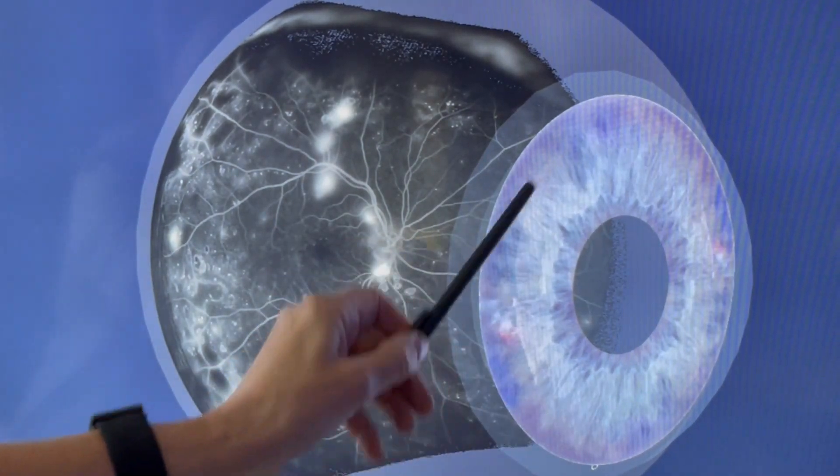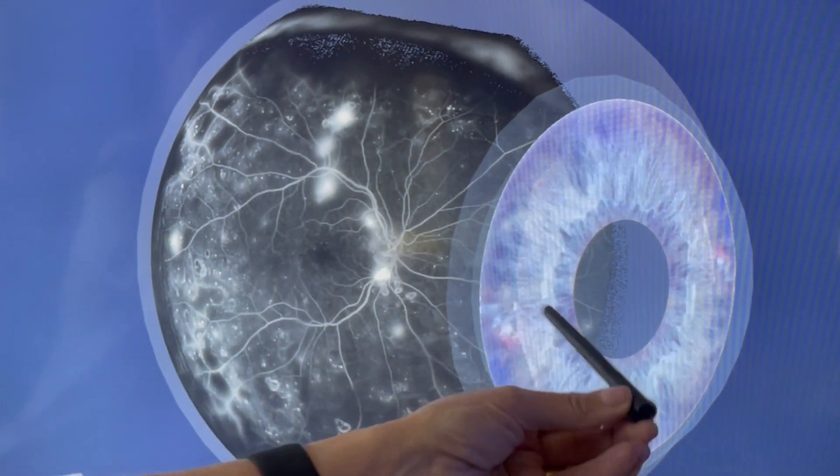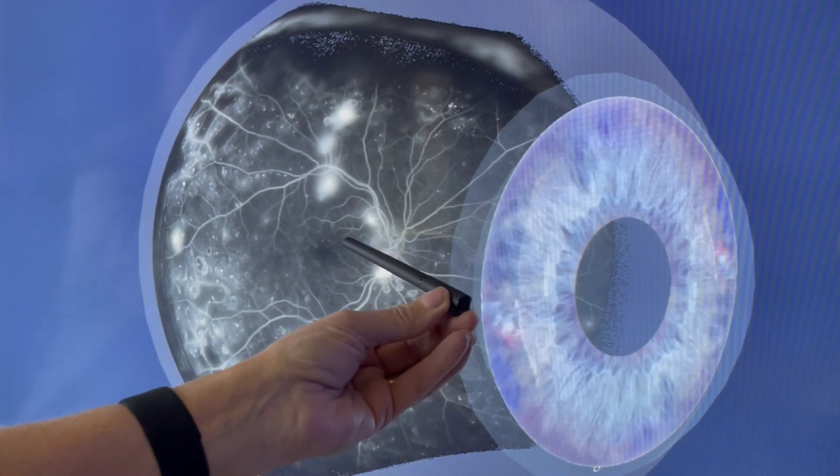Here again, this is the front of the eye. We are looking through the lens, through the iris, to the back, to the retina.